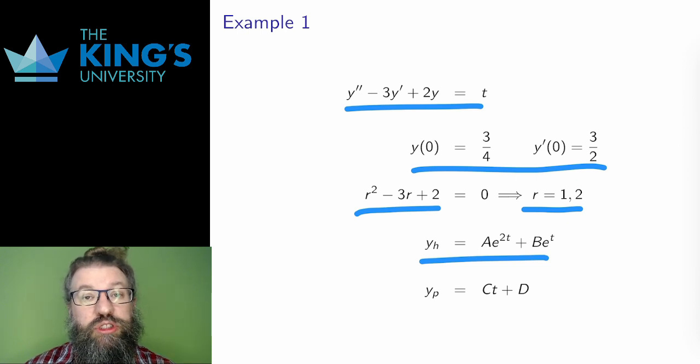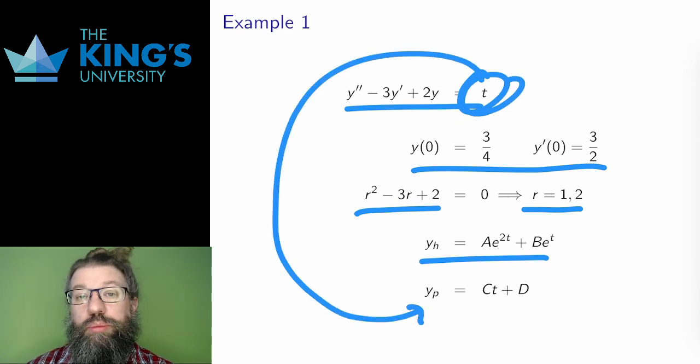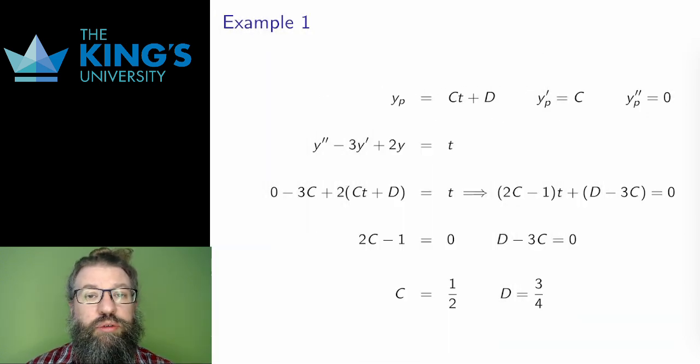I'll put the homogeneous solution aside for a moment. The forcing term is just t, so the particular solution should be a polynomial of degree 1, ct plus d. c and d are the undetermined coefficients. How do I find the values of c and d?